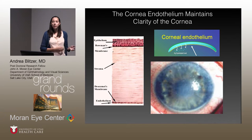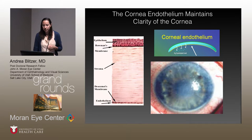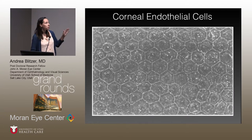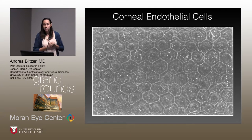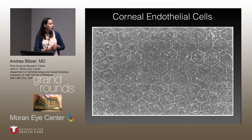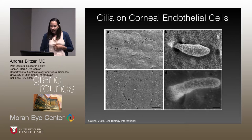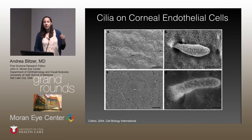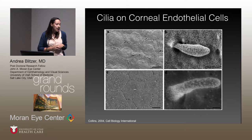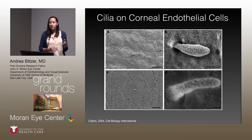Once you lose a critical number of these cells, the cornea will start to become cloudy and eventually require a surgical intervention. In 2004, it was shown that these cells occasionally have a cilium — not all the time, but every now and then you'll see one. That was really exciting because there'd never been cilia seen on endothelial cells before.